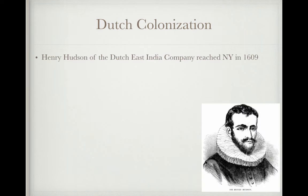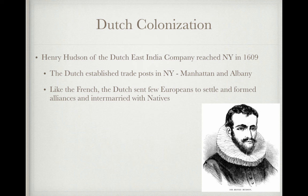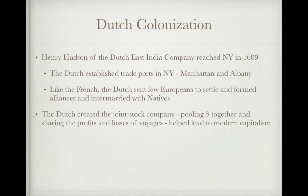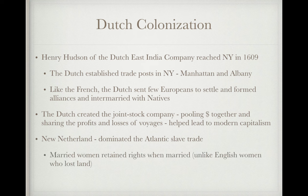Henry Hudson of the Dutch East India Company reached New York in 1609, and the Dutch established trade posts in present-day Manhattan and Albany. Like the French, the Dutch sent few Europeans to settle and formed alliances and intermarried with natives — making the English the only one of the four powers that did not intermarry. The Dutch created the joint-stock company, a forerunner to the modern corporation, where people pooled money and shared profits and losses. New Netherland dominated the Atlantic slave trade early on, and married Dutch women retained property rights, unlike English women who lost their land upon marriage. There was some religious toleration, practiced privately.